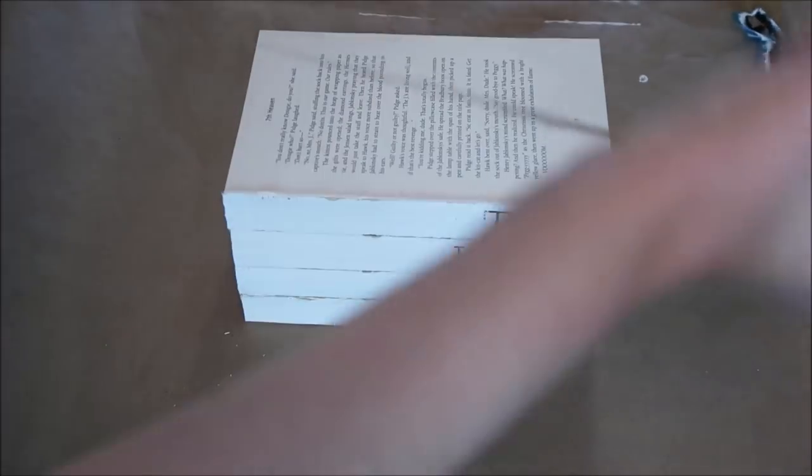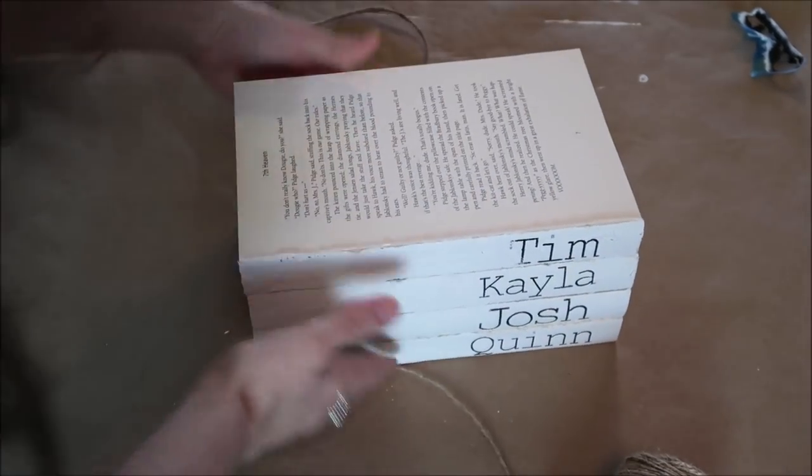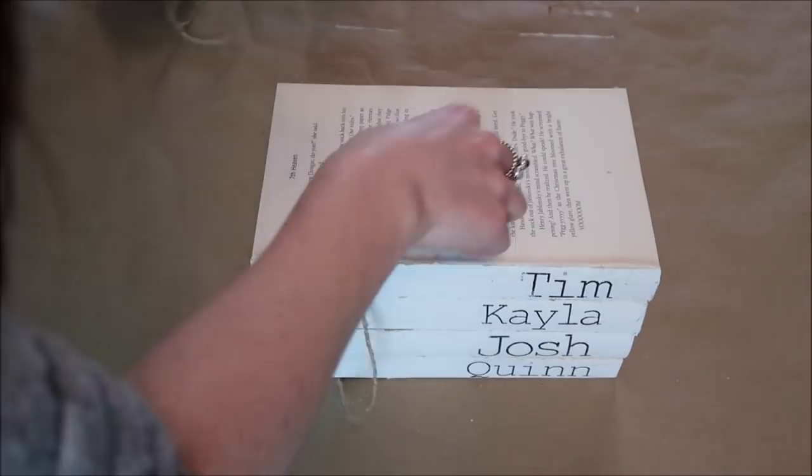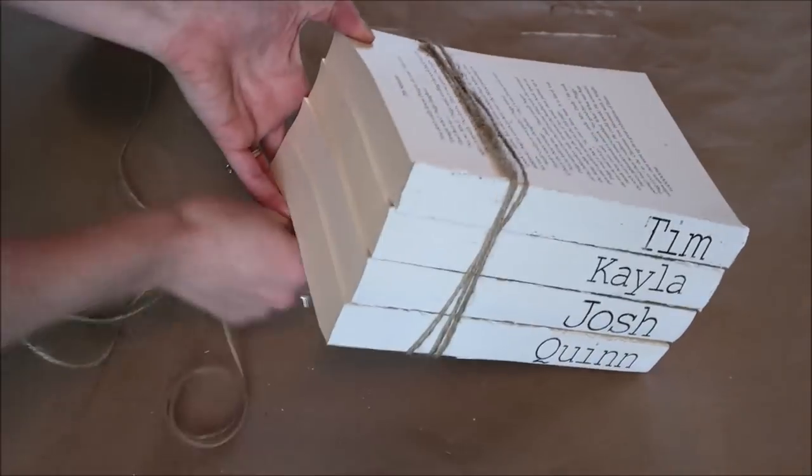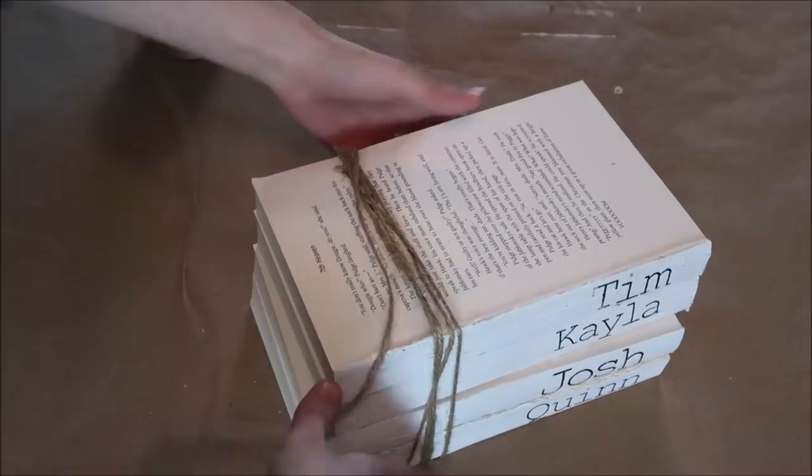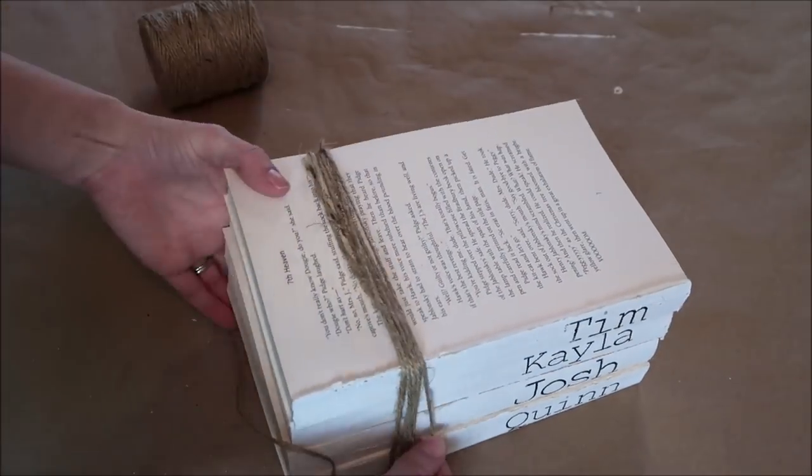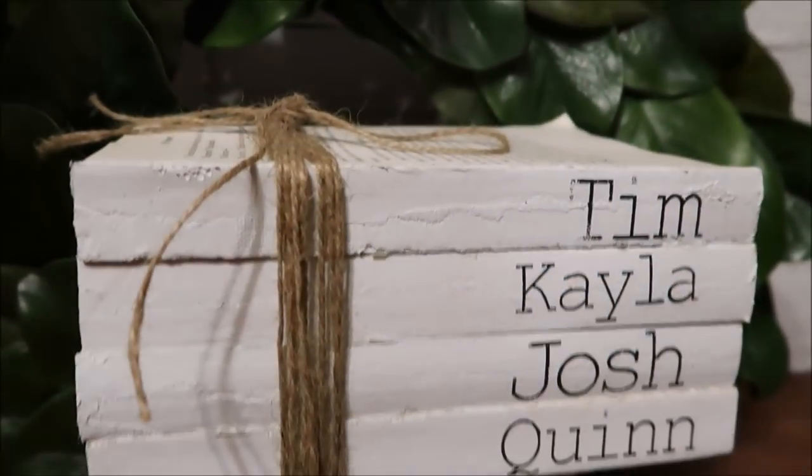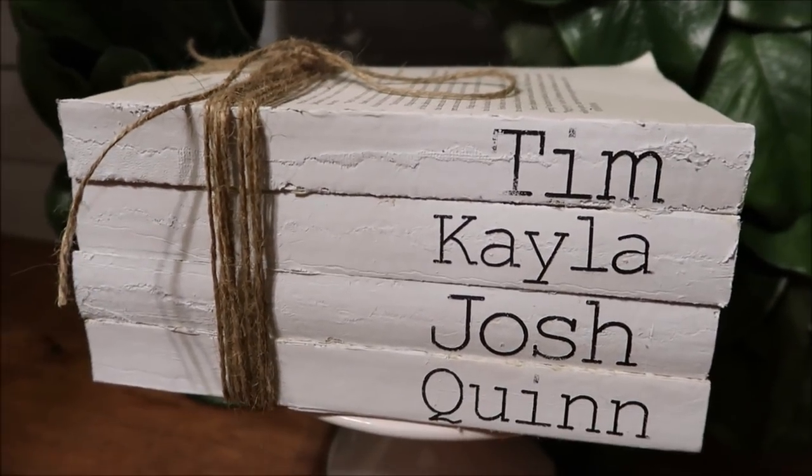After that I grab some of my jute string and wrap it around the books and my project is done. If you would like you can add a sealer over the paint as well. I love how these turned out they look so cute with a farmhouse style decor and I hope you enjoy this video. Give it a thumbs up if you did and subscribe if you are new to my channel here and have a great day love you bye.